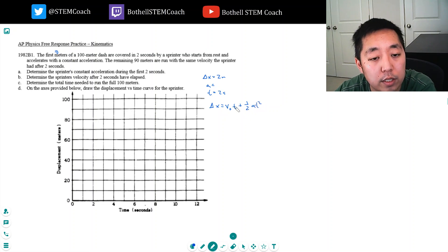Since he starts at rest, that part is zero, so delta x equals one half at squared, or a is equal to t squared over two delta x. Just rearranging this, t squared is two seconds squared divided by two times delta x. Delta x was two meters, so that's four over four.